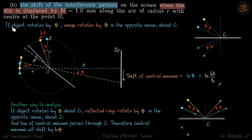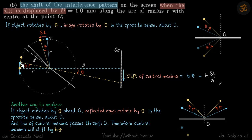We know that if the object is rotated by theta, then the image rotates by the same angle theta in the opposite sense about the point about which the object is rotated. So about this point, if the object is rotated by theta, the image will also rotate by the same angle theta. We have two images here — because of the initial source, these two images were formed by both mirrors, and when the source is rotated, both images due to both mirrors will rotate by the same angle theta.